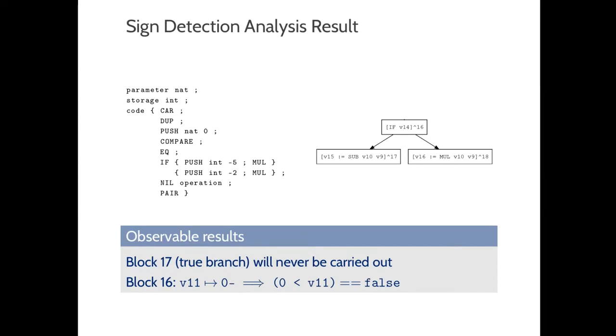We could also conclude, from the result of the analysis, that block 17, the true branch of the conditional, will never be carried out, as V11 has a sign value of 0 minus, and the test is V11 greater than 0, which will always result as false.